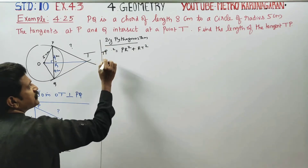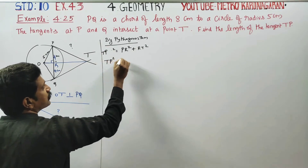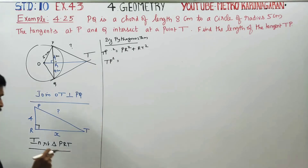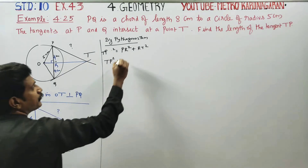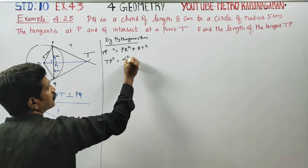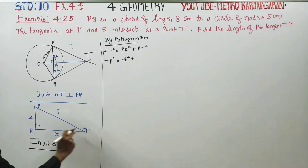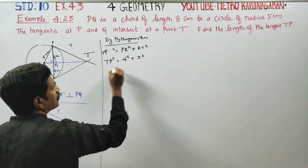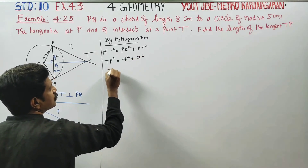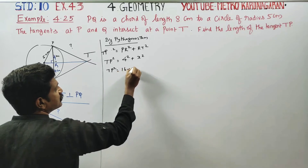PT squared is equal to 4 squared plus RT squared. So PT squared is equal to 16 plus x squared. This is equation number 1.